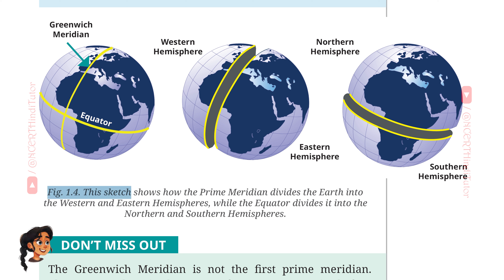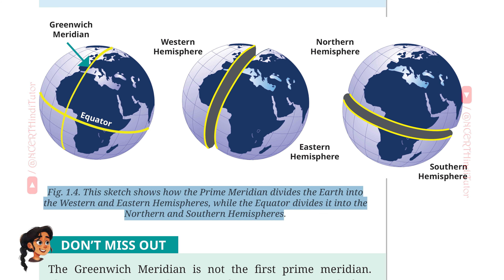Figure 1.4 shows how the prime meridian divides the earth into the Western and Eastern Hemispheres, while the equator divides it into the Northern and Southern Hemispheres. चित्र 1.4 यह दिखाता है कि prime meridian कैसे प्रिथ्वी को पश्चिमी और पूर्वी गोलार्ध में विभाजित करता है, जबकि भूमध्य रेखा इसे उत्तरी और दक्षिणी गोलार्ध में विभाजित करती है।